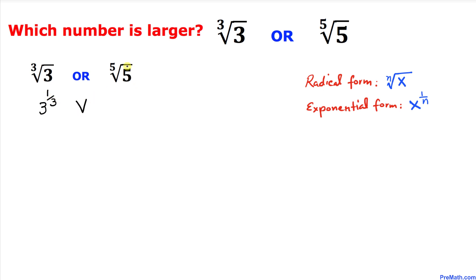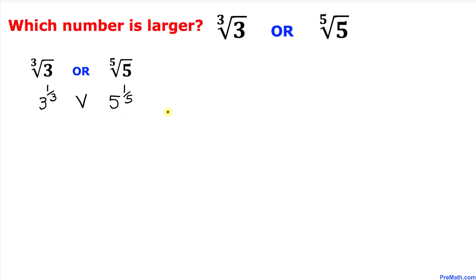Now we are going to tweak these numbers a little bit. Let's focus on these indices: one over three and the index in this other number is five. The least common denominator, or sometimes we call it least common multiple, of three and five is going to be 15. That means I'm going to take power 15 on both sides of these numbers.